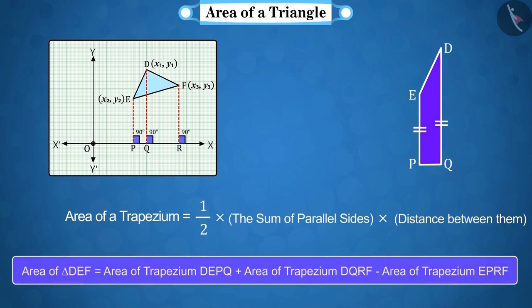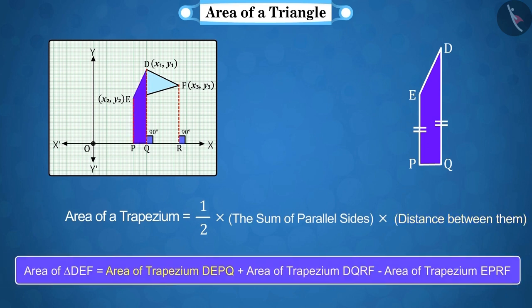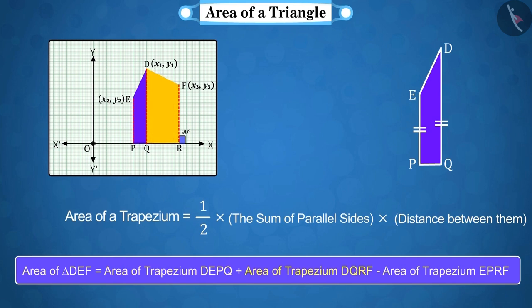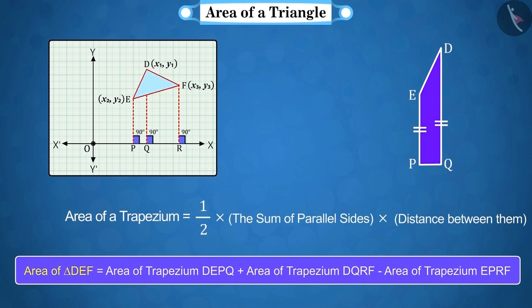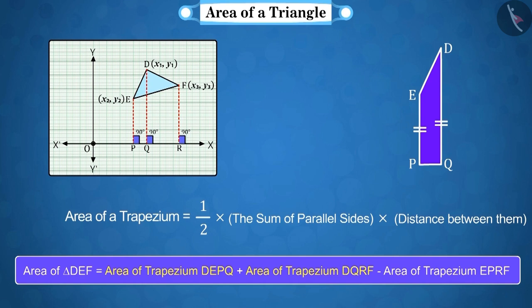If we add the areas of trapeziums DEPQ and DQRF, we get the area of the whole figure. But we only have to find the area of triangle DEF. Hence, we deduct the area of the trapezium EPRF from the total area to determine the area of the triangle DEF.